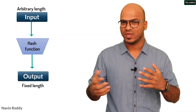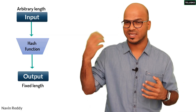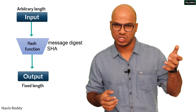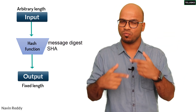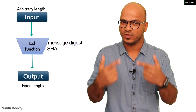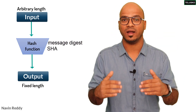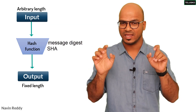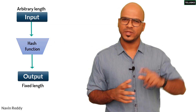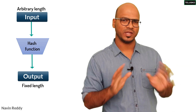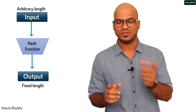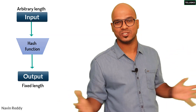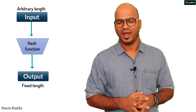Based on the algorithm we are using, the output length will change. For example, we have message digest and SHA. Based on what type of algorithm we use, we will get a different length of hash value, but your input can be of any type.